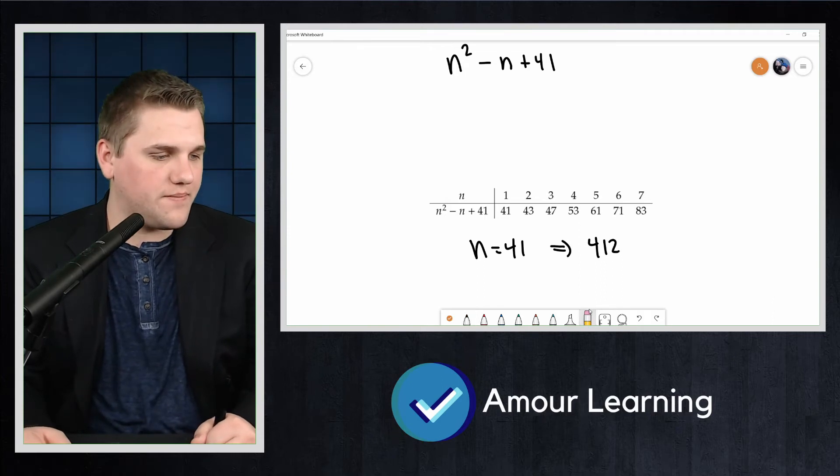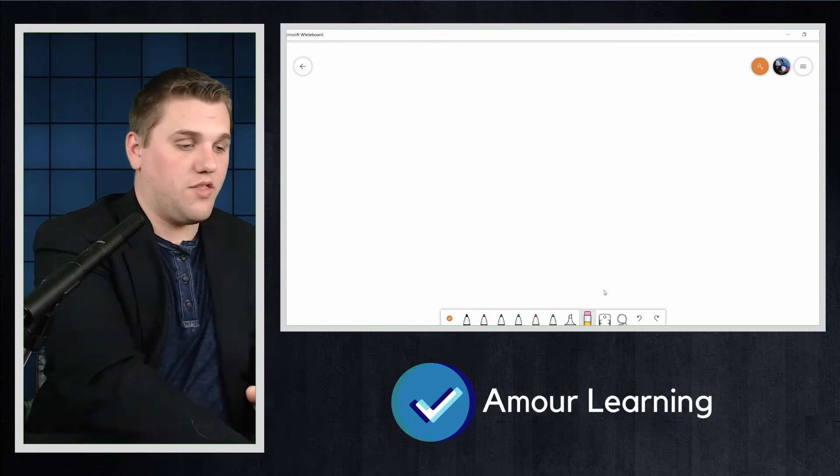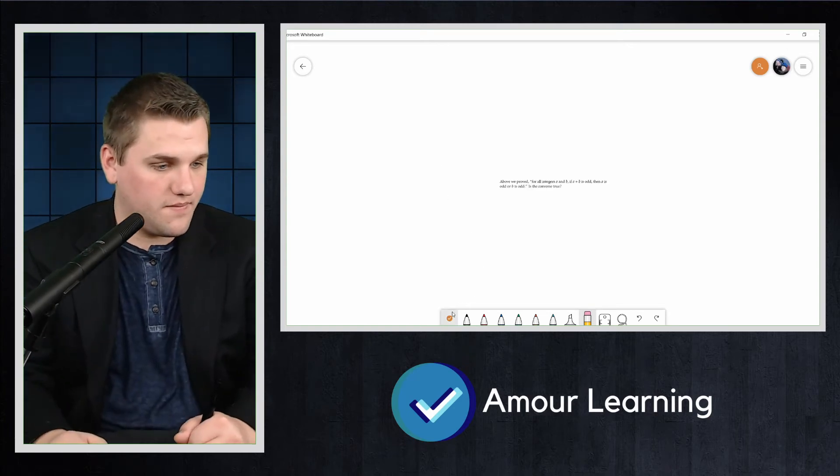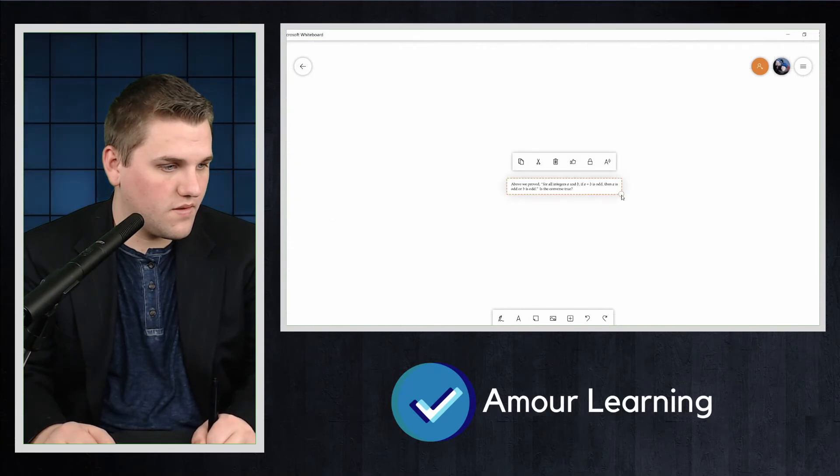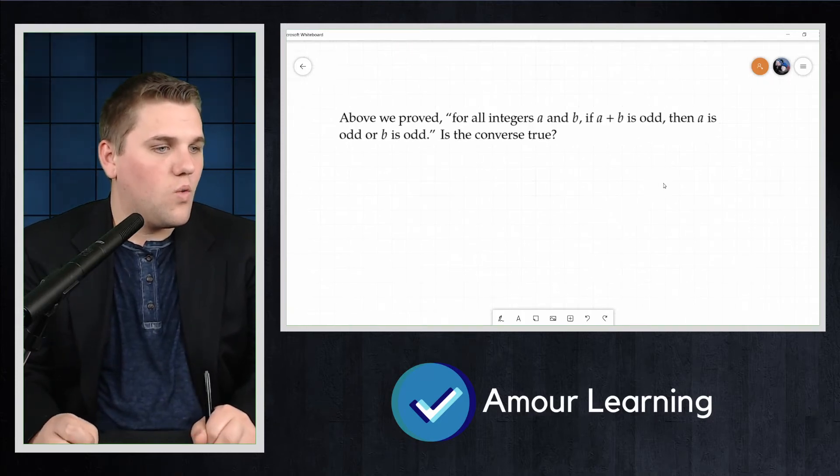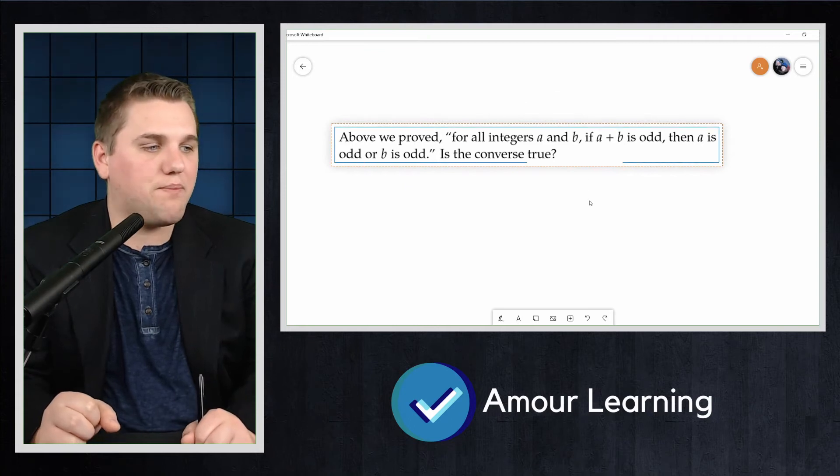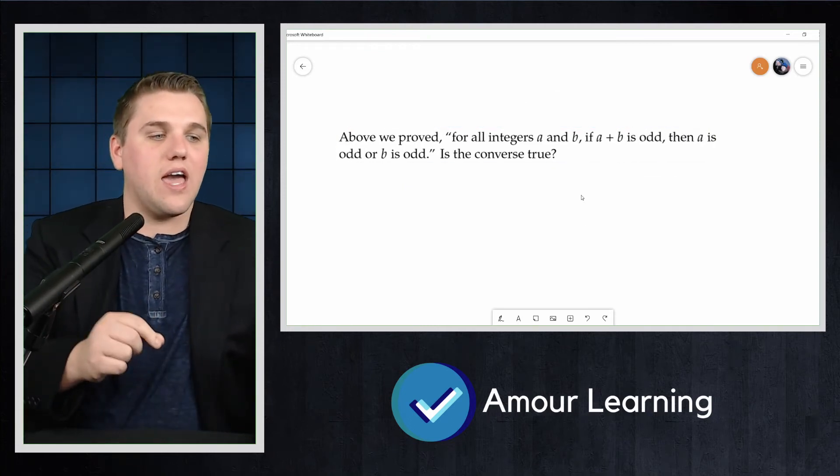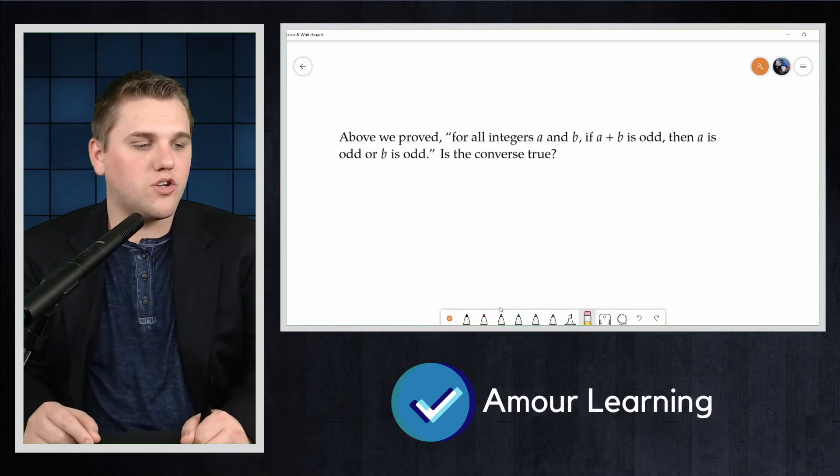All right, let's do one together. So the example that we're going to be doing: we proved that for all integers a and b, if a plus b is odd, then a is odd or b is odd. Is the converse true?